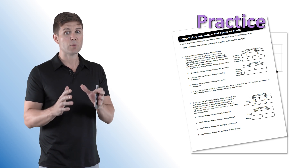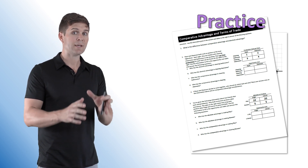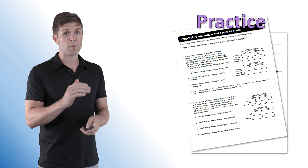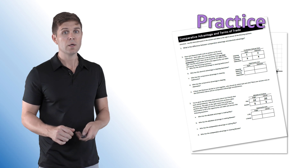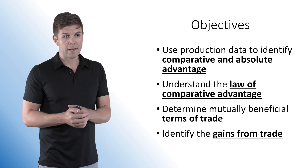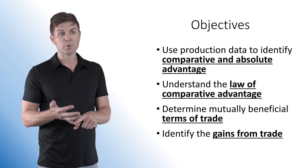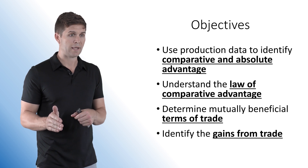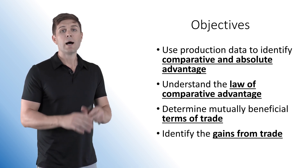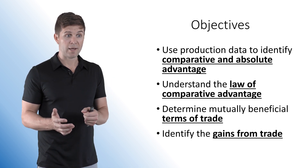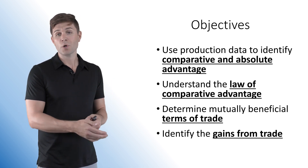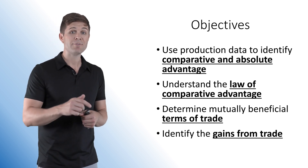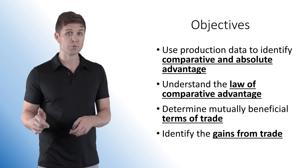This is probably the most difficult concept in all of Unit 1, so you really want to follow along. The objectives for today are to use production data to identify comparative and absolute advantage, understand the law of comparative advantage, determine mutually beneficial terms of trade, and identify the gains from trade.